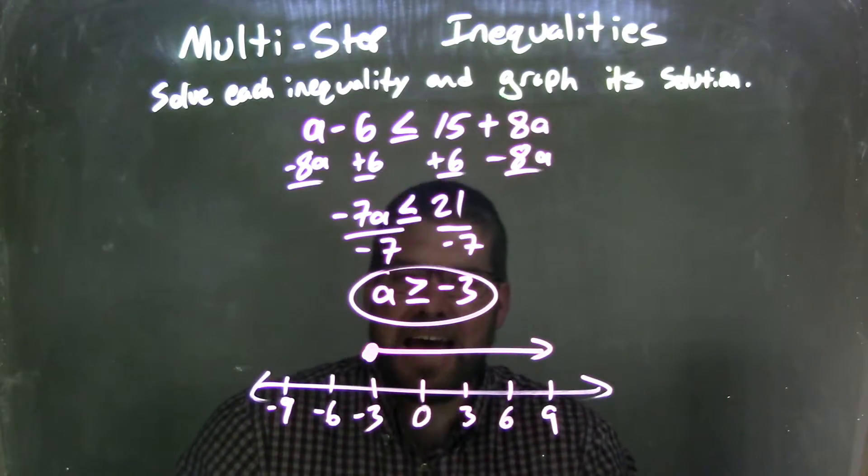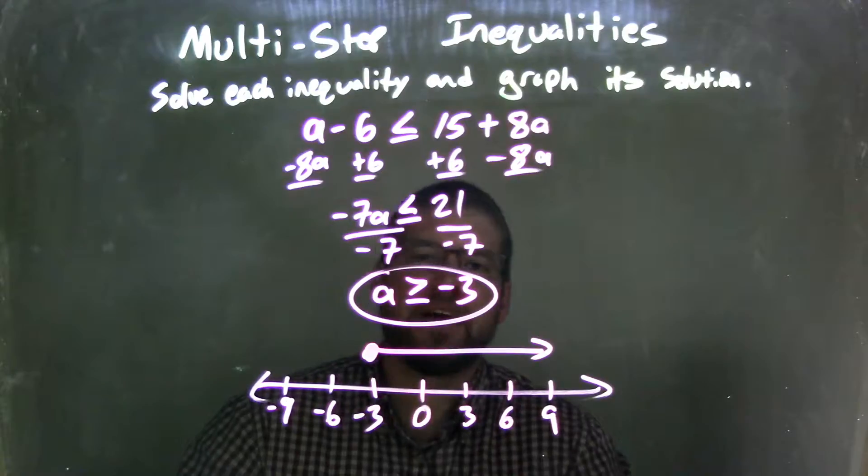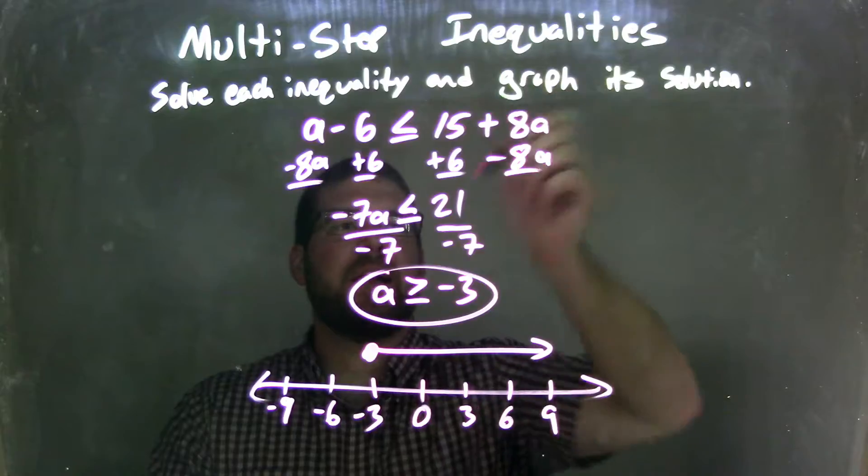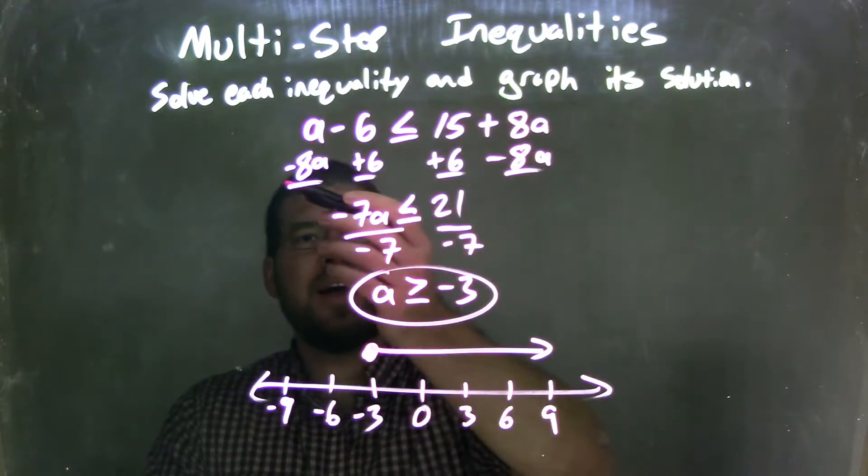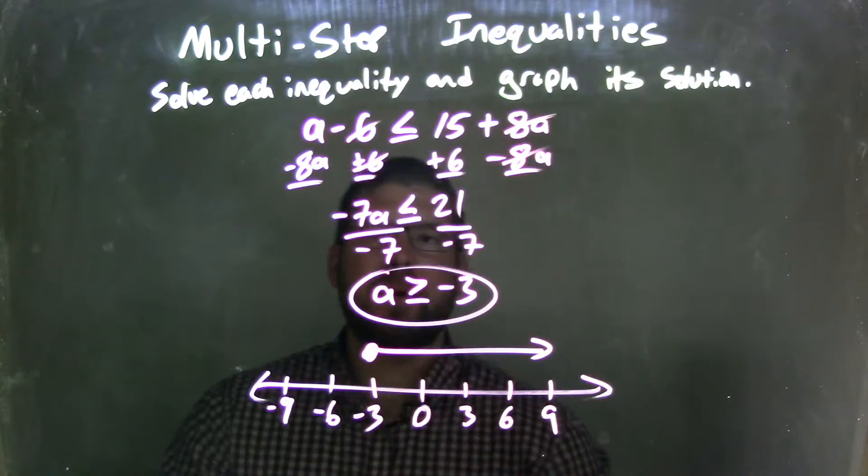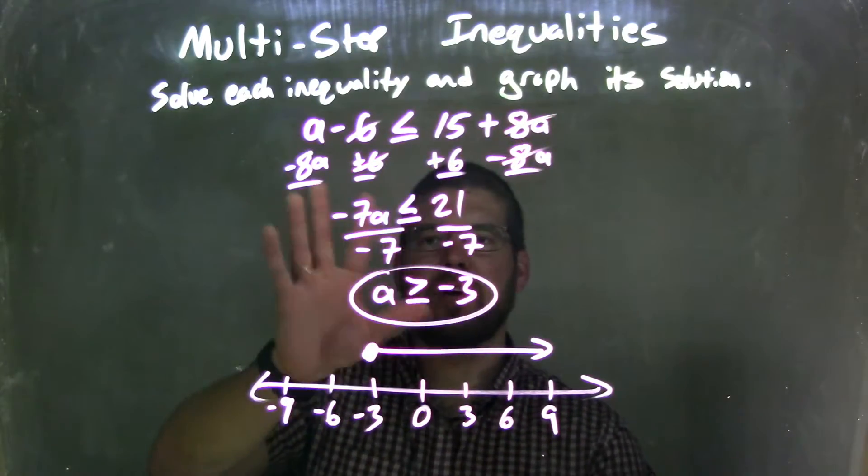We have our graph here. It matches our inequality, which is a is greater than or equal to negative 3. So let's recap. We had a minus 6 is less than or equal to 15 plus 8a. I subtracted 8a from both sides and I added 6 to both sides. Make sure everything's crossed off.